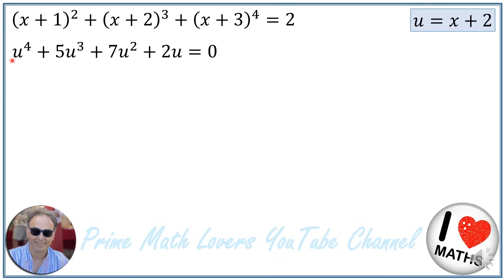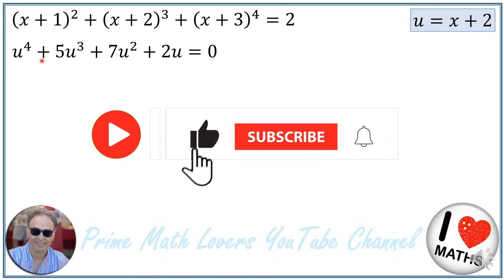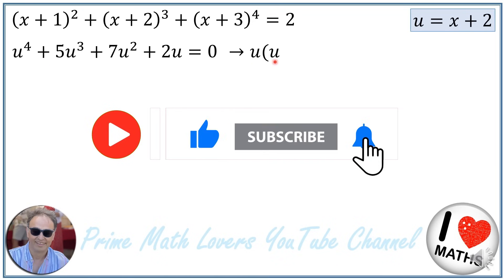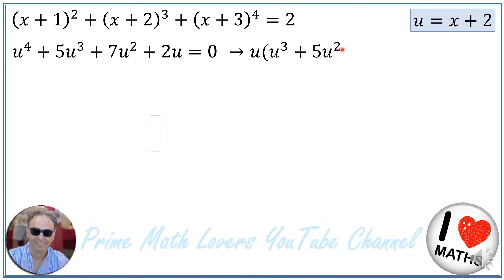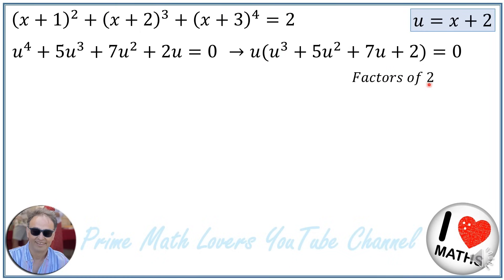For solving this equation, first I factor out u, so I have u × (u³ + 5u² + 7u + 2) = 0. For solving the cubic, we need to find factors of the constant number 2.